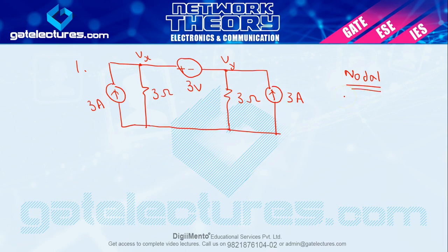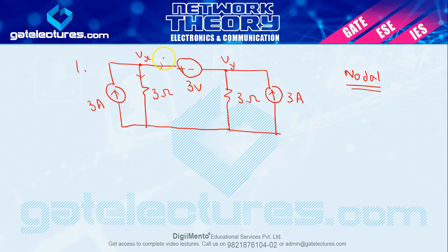The problem is we need to understand the nodal analysis. If I go to this branch with current — current is voltage difference divided by total resistance. If you look at this branch, our resistance is not given. If you look at this branch, the current value is not given. The resistance of the voltage source is not given, so the current value is not known.